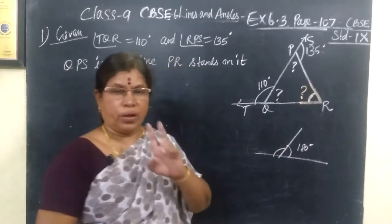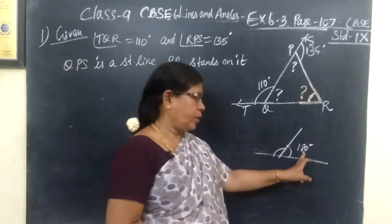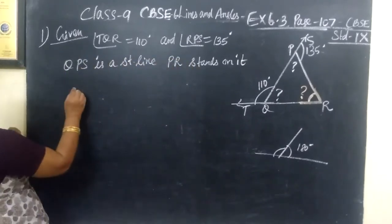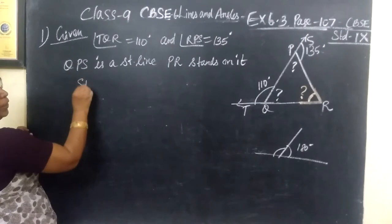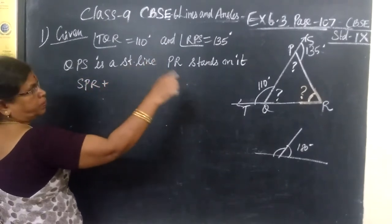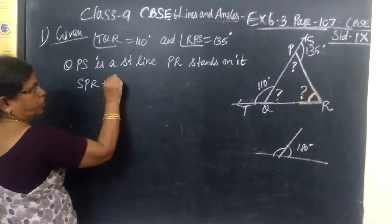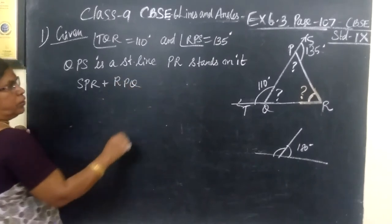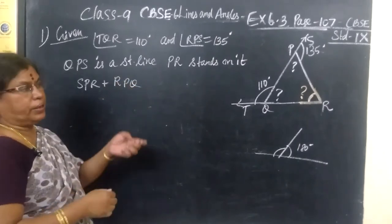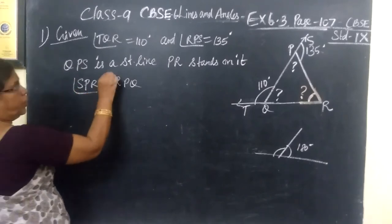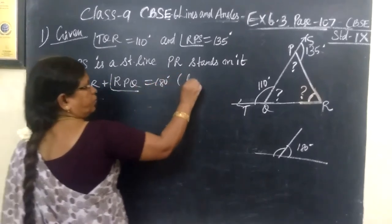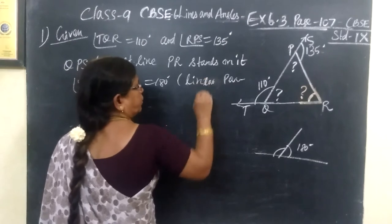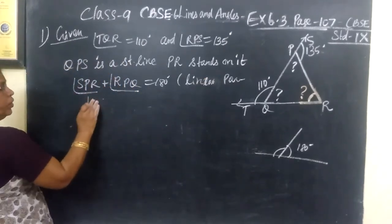Linear pair means you are given two angles, and if the sum is equal to 180 degrees, the two angles are known as linear pair. So here, SPR plus RPQ equal to 180 degrees. Then what is the reason? Linear pair. Here you write linear pair. Then this is 135.